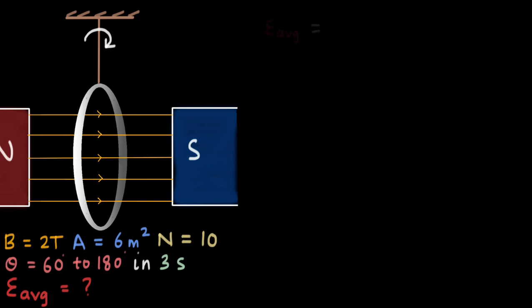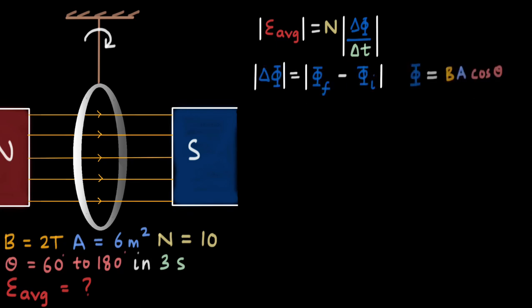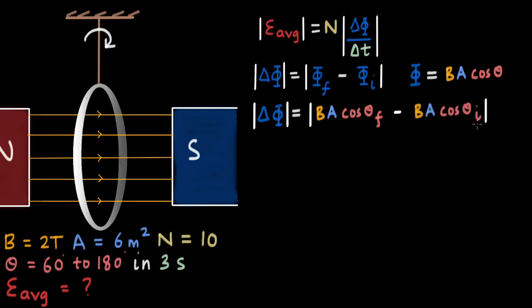The average induced EMF is given by N times the change in magnetic flux divided by delta t, and we are interested in the magnitude. Delta t is 3 seconds. We need to find the change in magnetic flux: delta phi = B·A·cos(θ_F) − B·A·cos(θ_I).